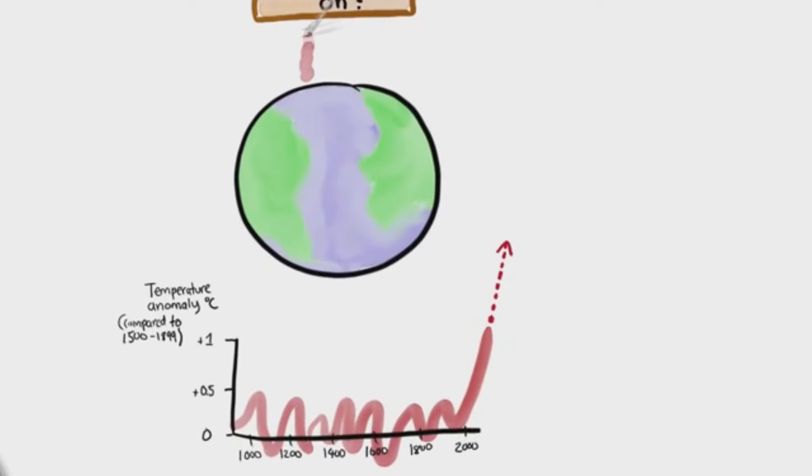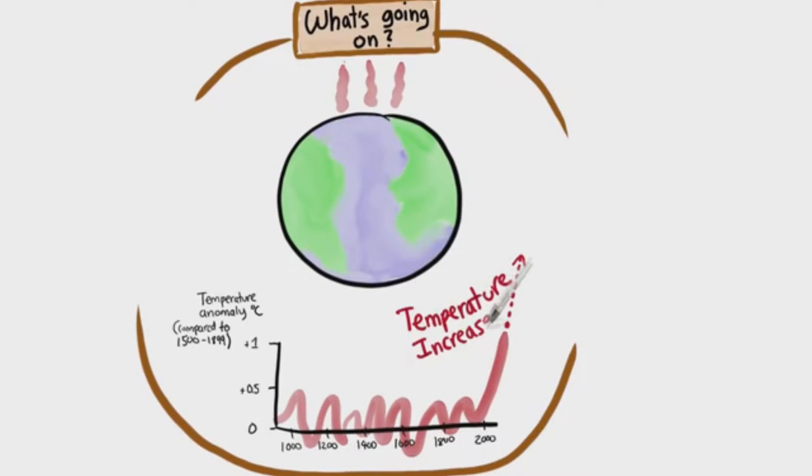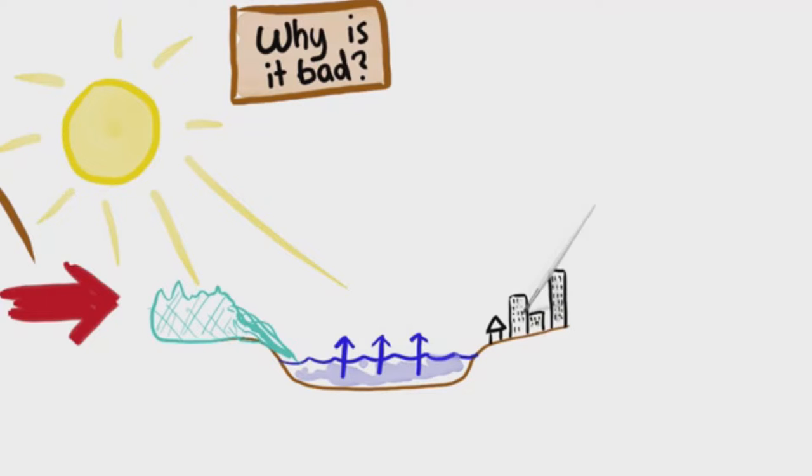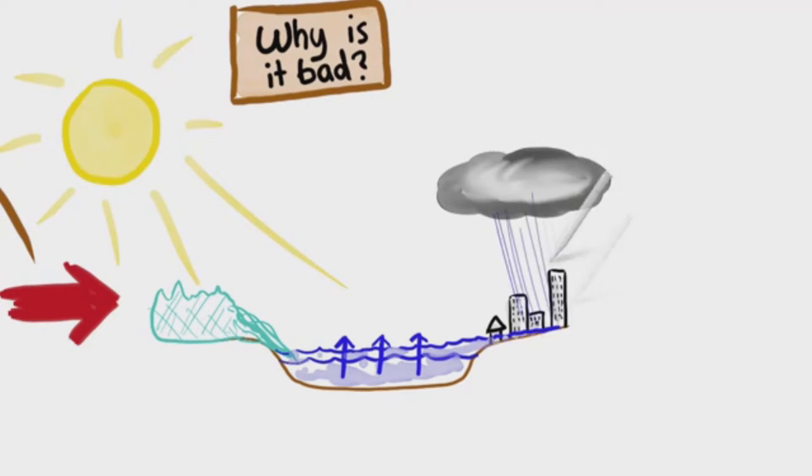We call this global warming because that's exactly what it is. But wait, a few degrees warmer, who cares? Well, actually it has nasty consequences. When oceans get hotter they expand, so sea levels rise. The heat also melts ice and glaciers sitting on land in places like Greenland and Antarctica, which raises sea levels even further.